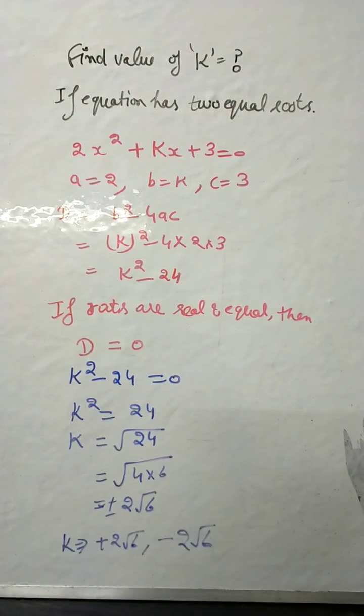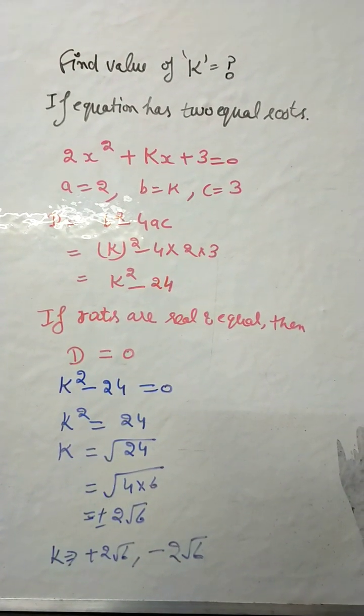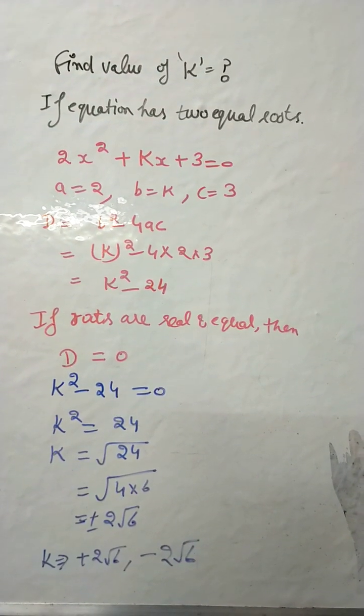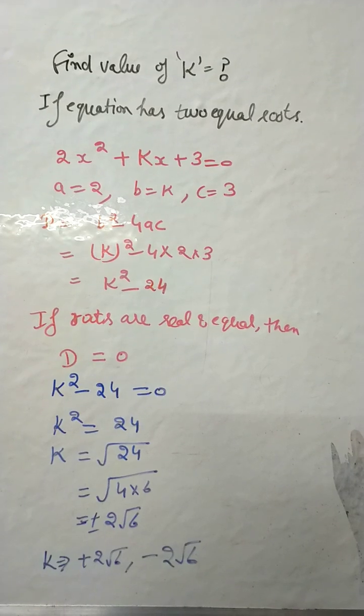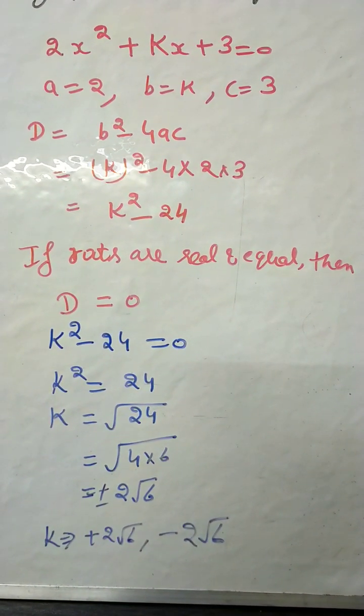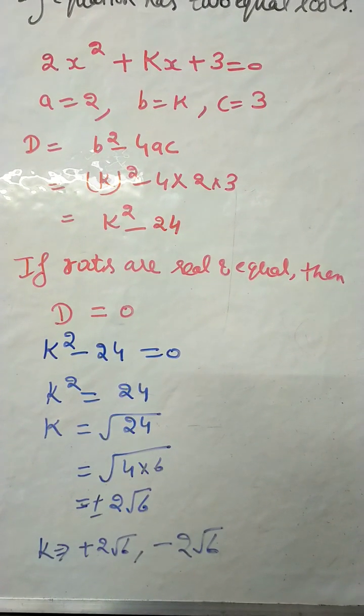Then, D value is k² - 24 = 0. k² = 24. Now, k = √24. 24 is 4 × 6. Root of 4 is 2, so 2√6 plus minus.